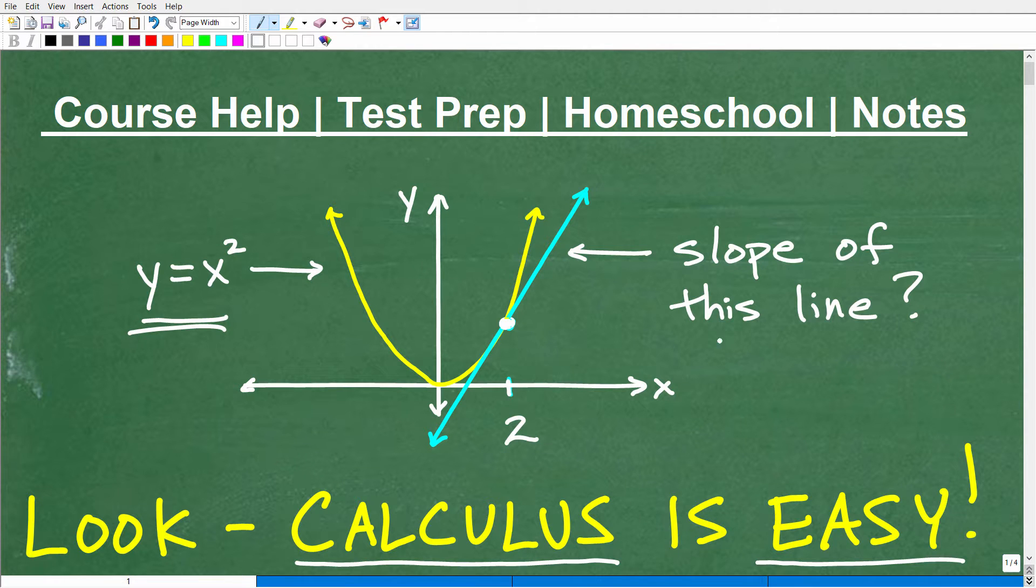So what I'm interested in is how to find the slope of this line, given this information. So here is a line. Of course, we could describe that line as y equals mx plus b. And I want to know, what is the slope of this line right here?